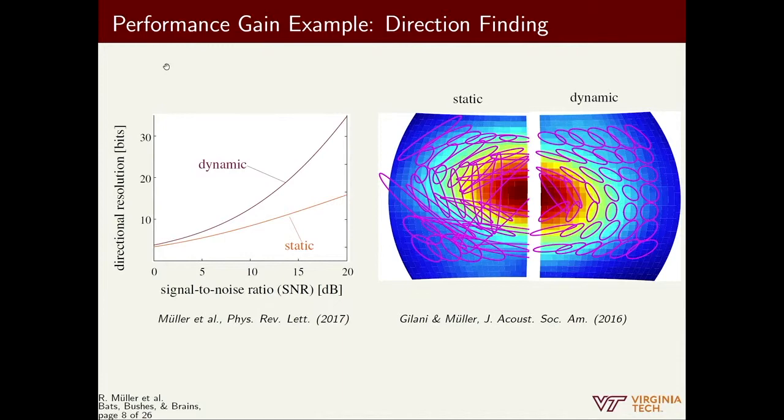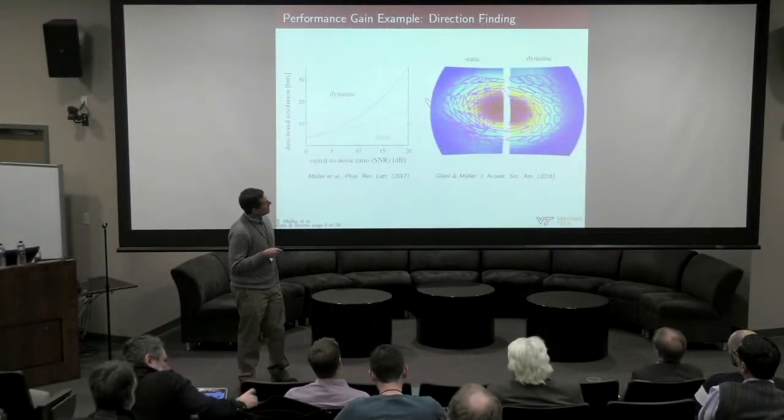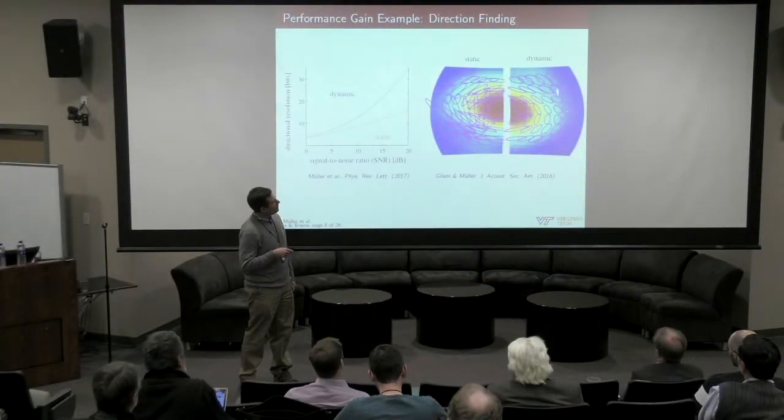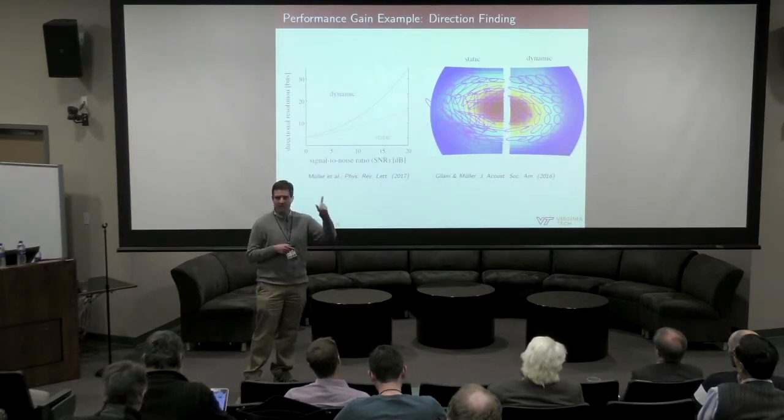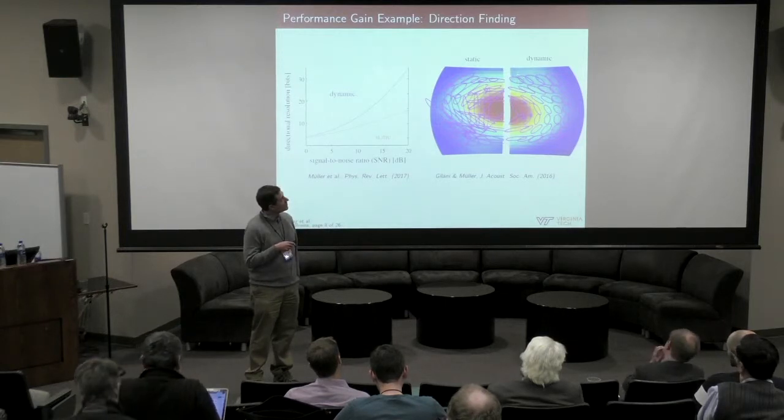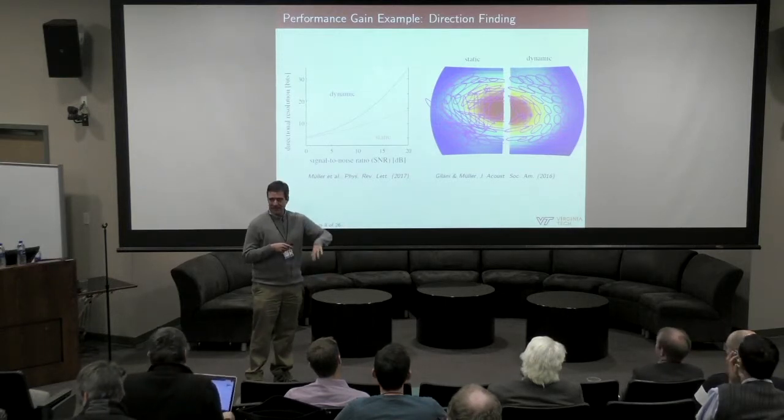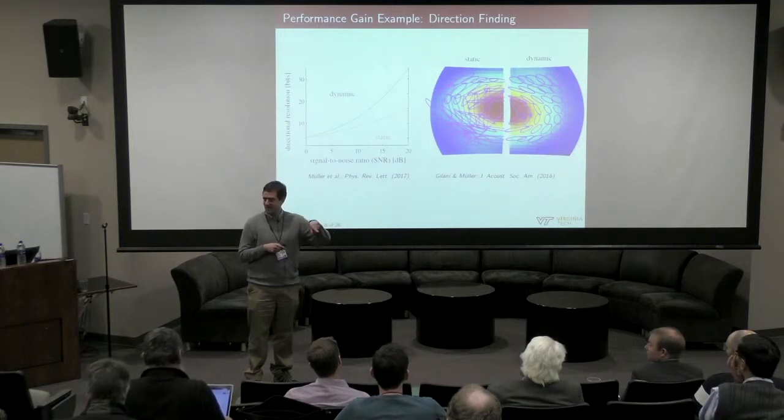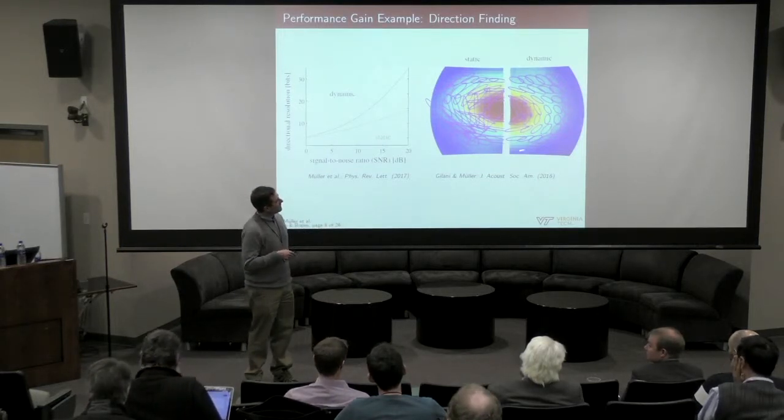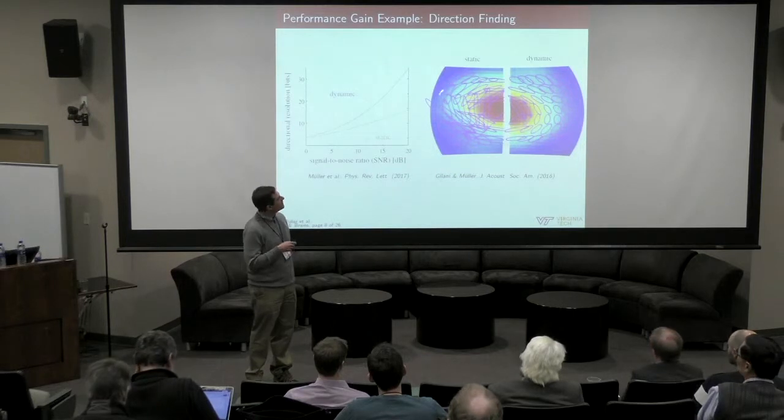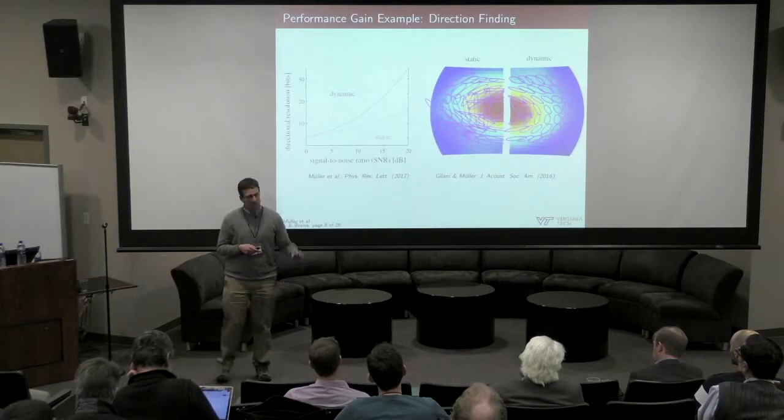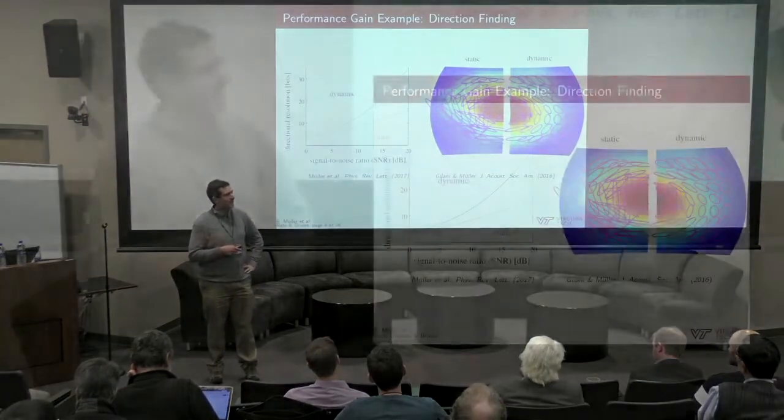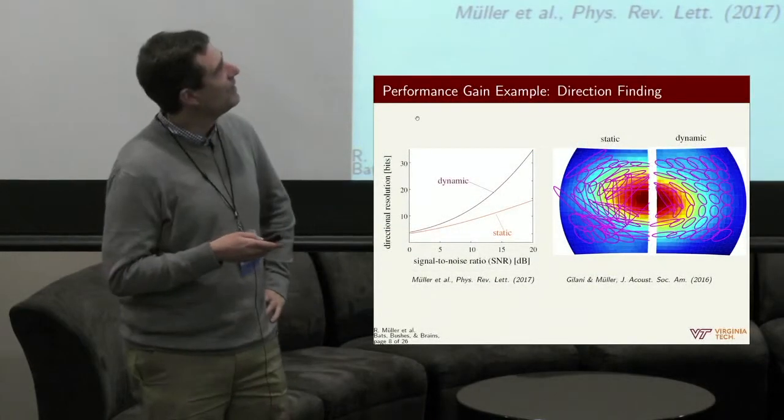The other picture here is about accuracy. How accurate can you tell the direction? The magenta ellipses here superposed on the beams pattern of the system, they tell you 90% confidence intervals. If I know the target is really at this direction in the middle of the ellipse, so 90% of my estimates are in this ellipse. You can see right hand side dynamic, really nice small ellipses. Left hand side static, much more messy, much larger error ellipses. For the traditional sonar paradigm, this does something, this is useful.